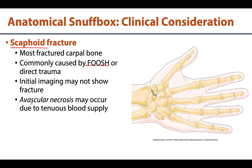The scaphoid has a very tenuous blood supply — in fact, it has retrograde blood flow, which will be discussed in more detail in the clinical and anatomical correlation session. This can cause degenerative joint disease in the wrist, as the scaphoid is an important part of the radiocarpal joint and is one of the main bones articulating with the distal radius.